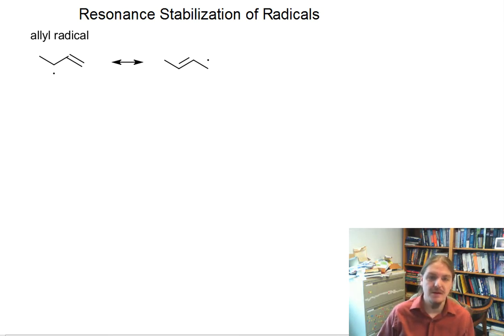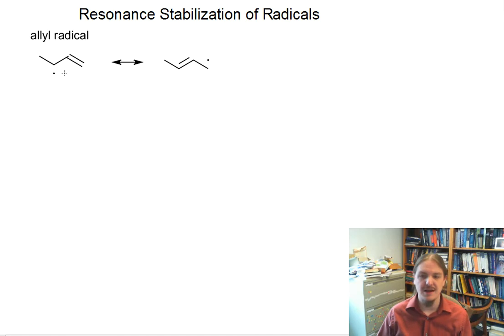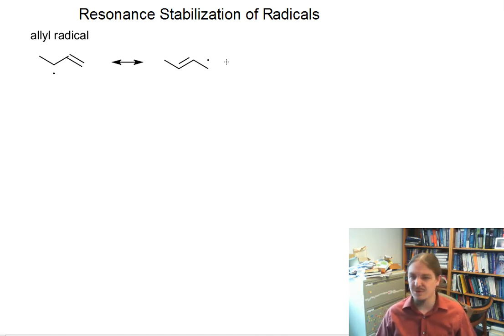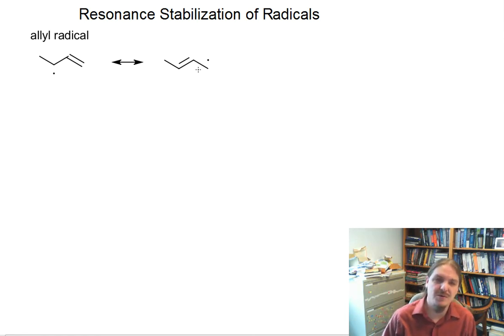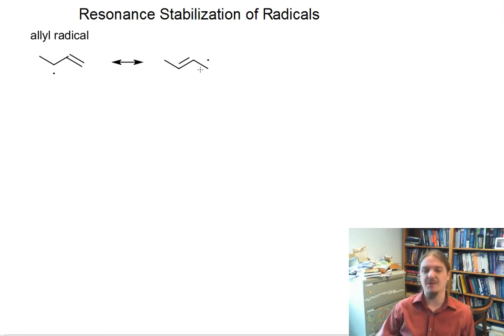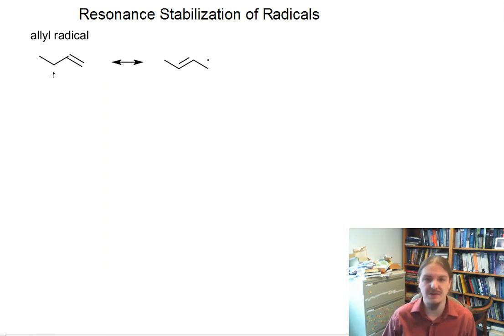Just like for ionic species, we can draw arrows that represent how these two resonance structures would interconvert. And of course we have to remember that resonance structures aren't actually switching back and forth in time, but understanding the flow of electrons is conceptually helpful to us.